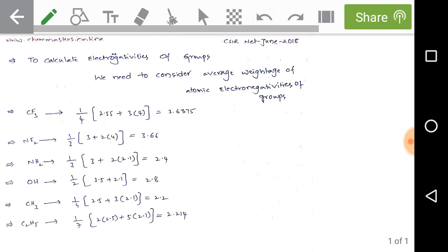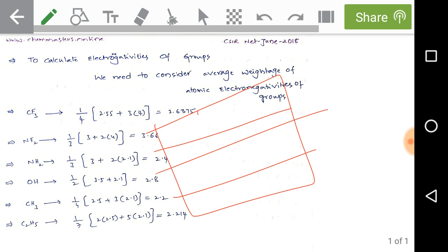To calculate electronegativities of groups, we need to consider average weightage of atomic electronegativities of the group. To solve this problem we need basic knowledge on electronegativities of the elements. We need to have command on the periodic table. We come across electronegativities of elements from our lower classes, from our high schools.